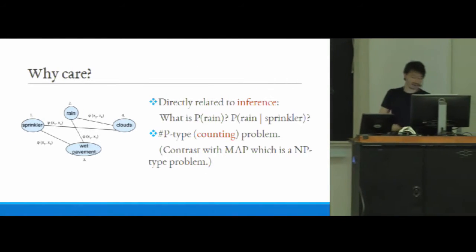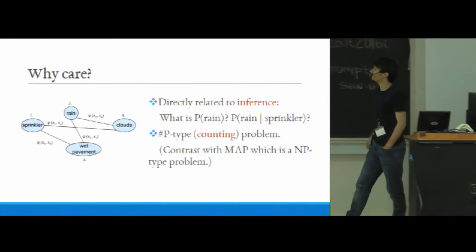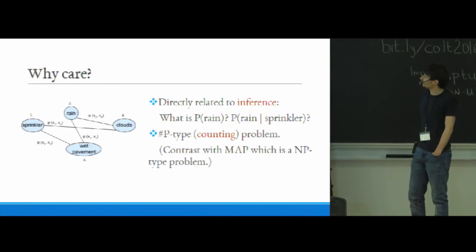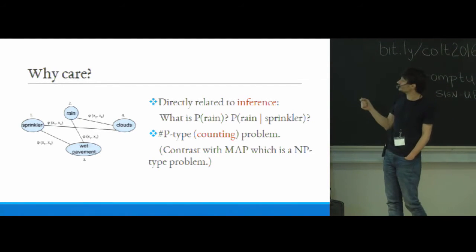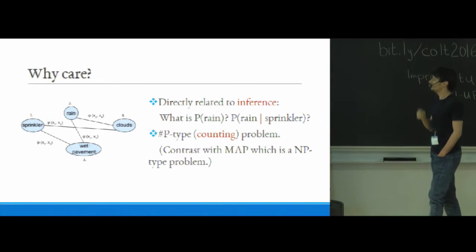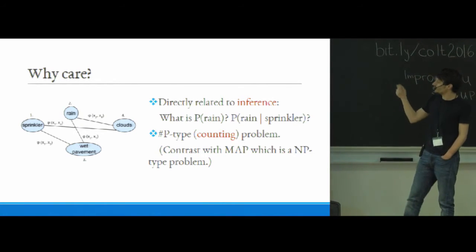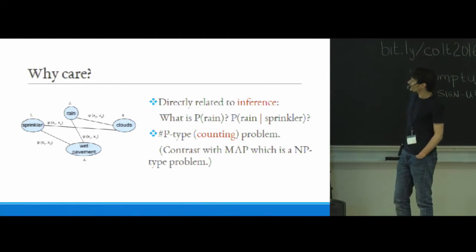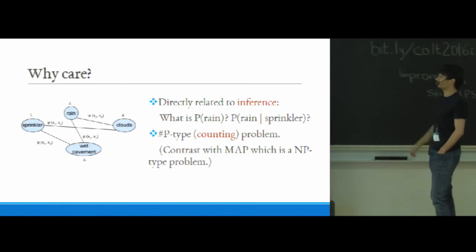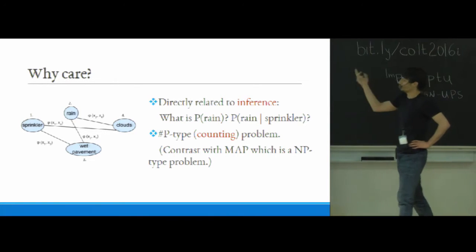So if you haven't seen this before, you might ask why would you care about calculating this partition function? Well, you may not care about that, but you certainly might care, if you have this in practice, to calculate marginals of the distribution. So you might ask what's the probability of rain, or what's the probability of rain given that the pavement was wet? And it turns out that this is very closely related to calculating the partition function. In fact, they're inter-reducible one to another.